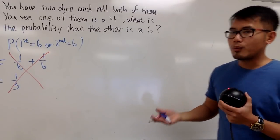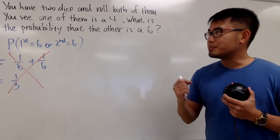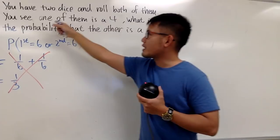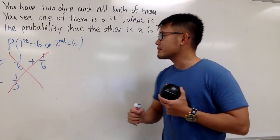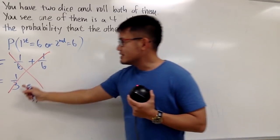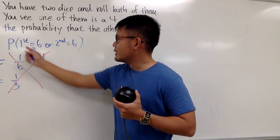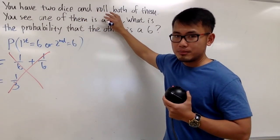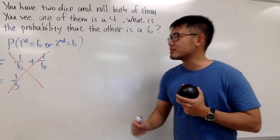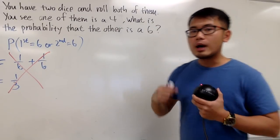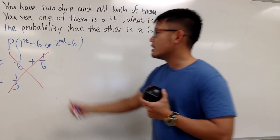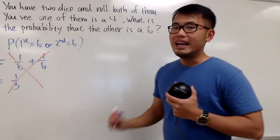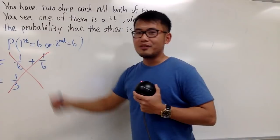Let me tell you guys that this right here is not correct. First of all, you should be suspecting this is wrong because we didn't use the given information at all — and in fact, that information does affect the probability. And the second thing is that 1 third is not even the correct answer to this question. Suppose we didn't have this information at all and were just trying to find out the probability that one of the dice is a 6 — namely, the first one is a 6 or the second one is a 6. This right here is not even the correct answer to that.